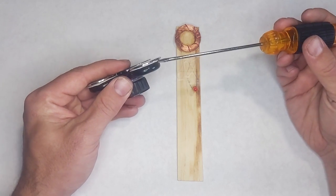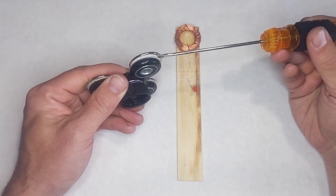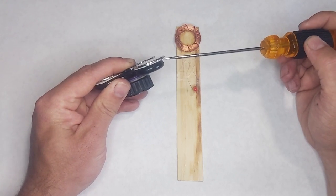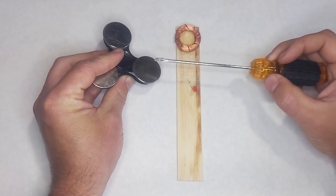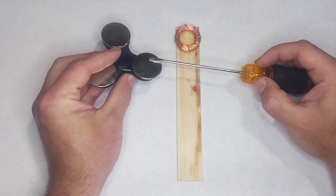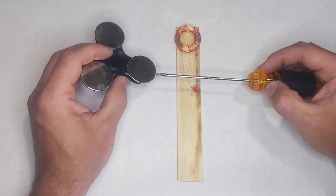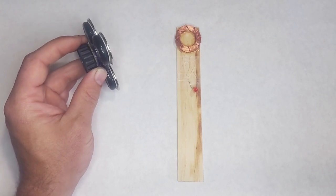But these magnets seem like they're a pretty big part of what makes this go. They're really thin, but they're pretty wide. And they are awfully, awfully strong. If I just hold the screwdriver near it, it pulls the whole fidget spinner over to it. So they're strong magnets.